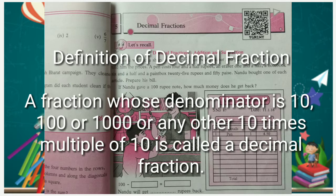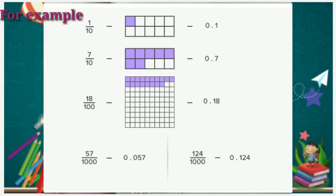100 or 1000 or any other 10 times multiple of 10 is called a decimal fraction. For example,